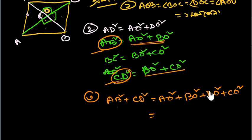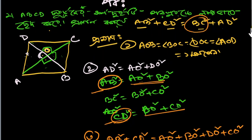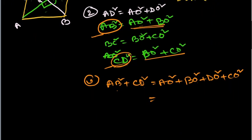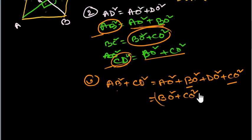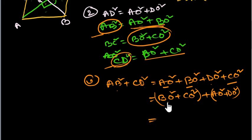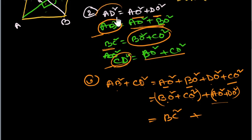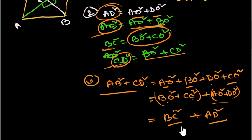I will say BC square plus AD square. How? BO square plus CO square equals BC square. AO square plus DO square equals AD square. So: AB square plus CD square equals BC square plus AD square.